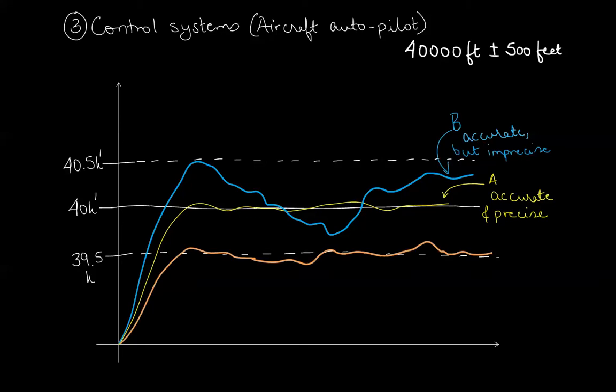System C on the other hand is taking the aircraft or takes the aircraft to 39,500 feet and somehow doesn't take it to 40,000 but it does a good job of holding the aircraft at 39,500 feet. Therefore, though the system is inaccurate it is being precise.